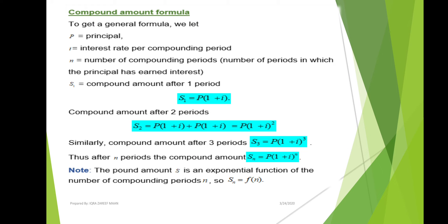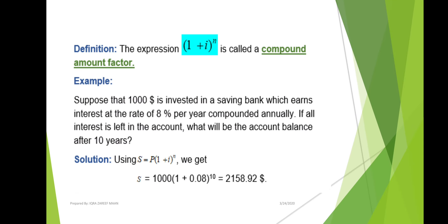The compound amount is simply a function of the exponent n. As the compounding period increases, the value of n also increases: for the second period n equals 2, for the third n equals 3, for the fourth n equals 4, and for the nth period n equals n. The expression (1+i) raised to the power n is called the compound amount factor.